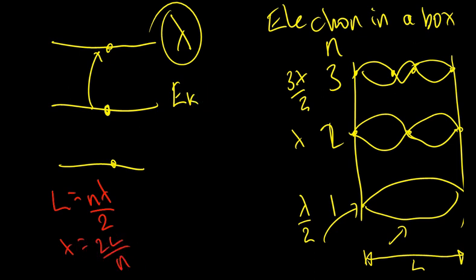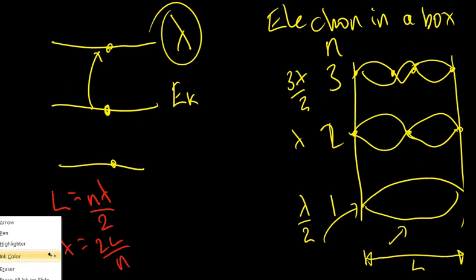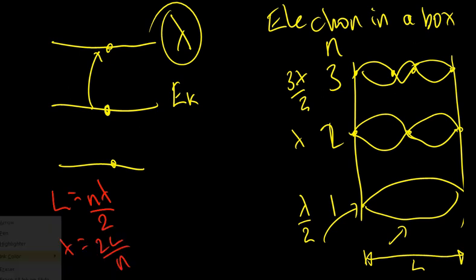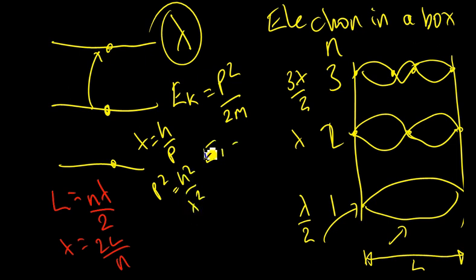Now, Ek is given by that equation that we're never going to forget, which is p²/2m, and λ = h/p because it's an associated wavelength from de Broglie. That means that p² will be equal to h²/λ². Substituting for p², I'll get that Ek = h²/(2mλ²). And from this equation,